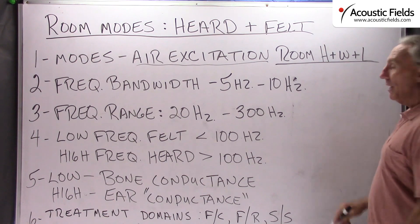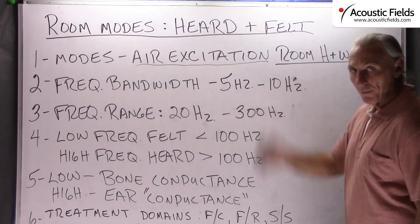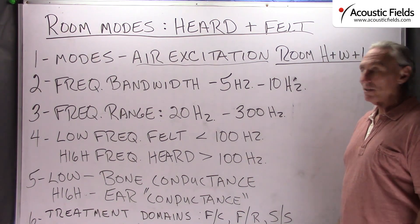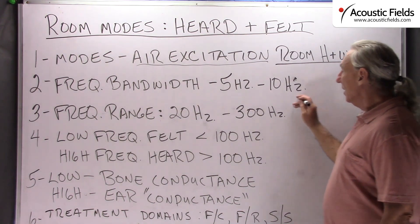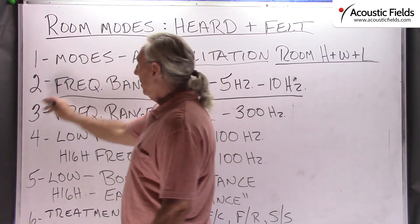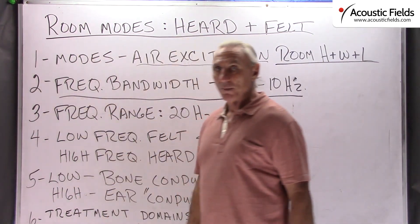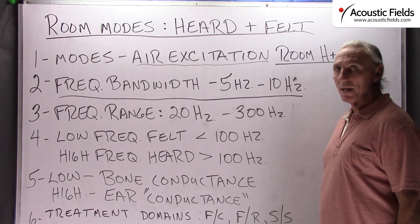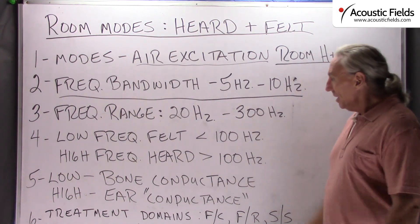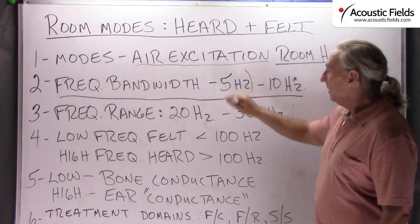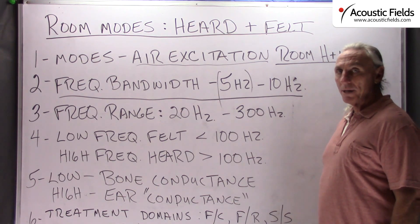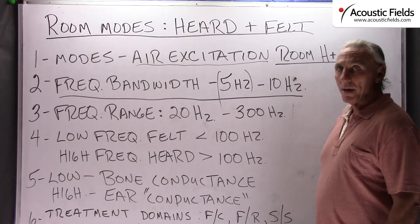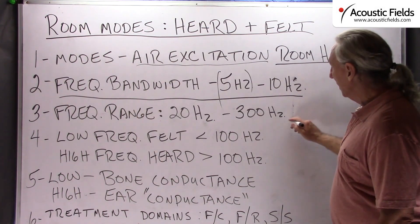So where do we have it? We have height, width, and length — all three axes that we work with in acoustics. The average bandwidth of most of these modes in small room acoustics is five to ten cycles. You try to minimize the grouping of them, keep them less than five — that helps with frequency response and definitely helps with treatment and cost.